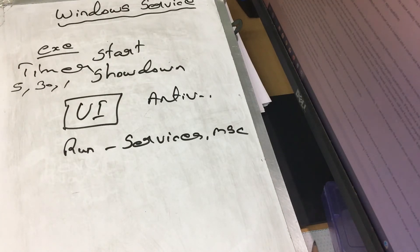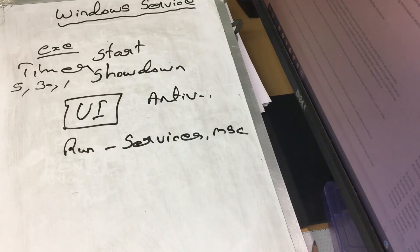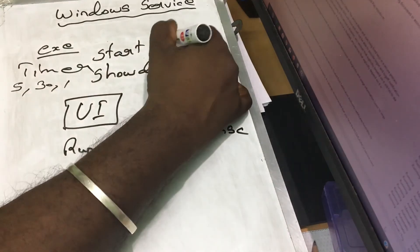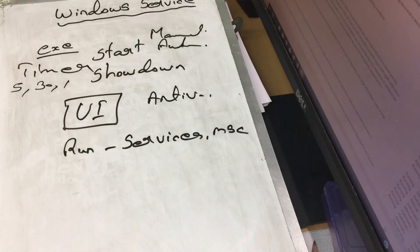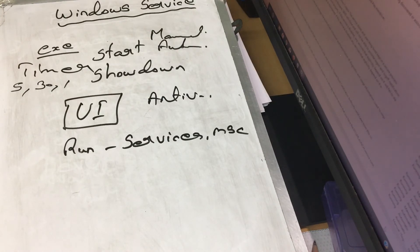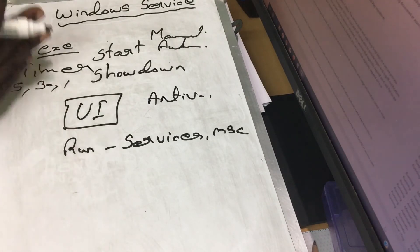You have to start the service. You know what services are running in Windows. You can start the service manually or automatically. For example, SQL Server is running on every server — that is one service. IIS is running on every server — that is also one service. You can see all of the services.